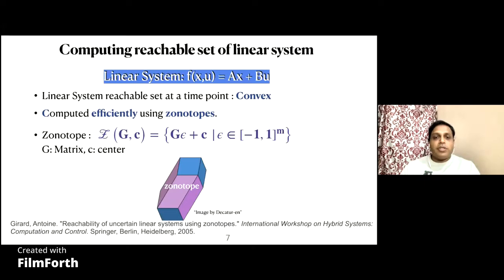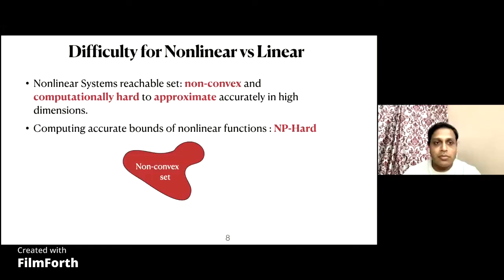The reachable set of a linear system at any given time t is convex, and can be approximated very accurately using zonotopes. A zonotope is a set of points described as a linear combination of vectors where the combining coefficients are bounded within unit intervals. A very efficient algorithm for over-approximating reachable sets of linear systems using zonotopes was described by Antoinne Girard in a 2005 paper. Unlike linear systems, accurately approximating reachable sets of nonlinear systems is computationally very hard, because the reachable sets are non-convex, and computing accurate bounds of nonlinear functions is known to be NP-hard.